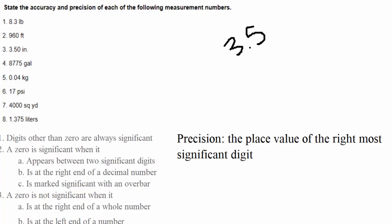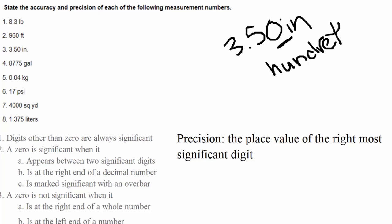Looking at 3.50 inches — that zero at the right end of the decimal was significant, so we had three significant digits. The right-most place value is the hundredths place. If you don't remember your decimal place values, go back and review those. So 3.50 inches is precise to the hundredths.